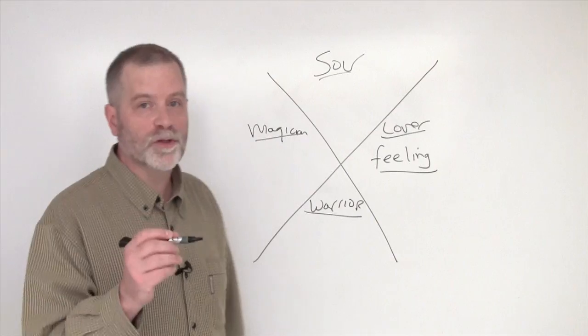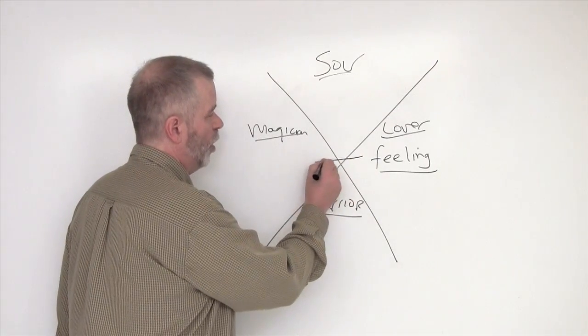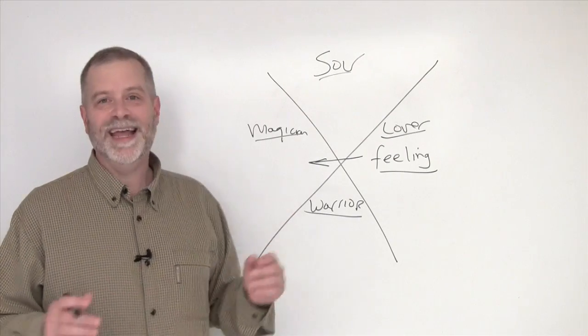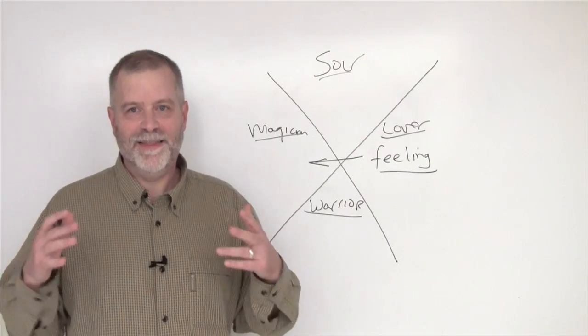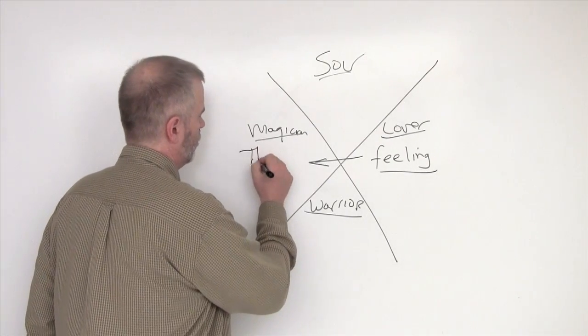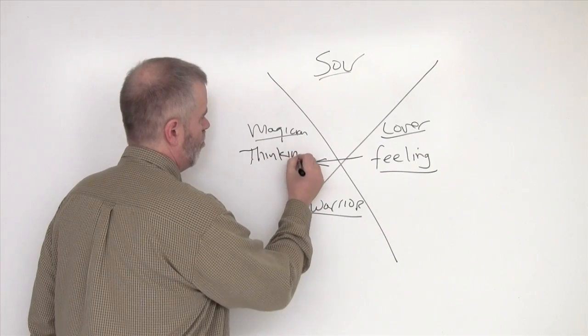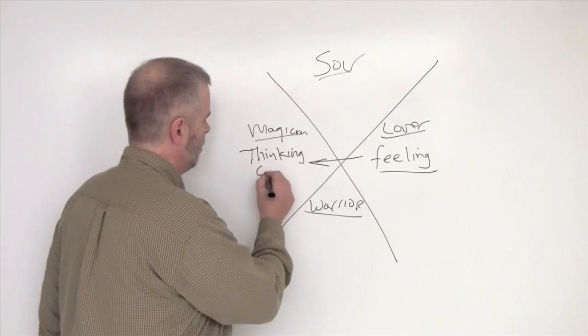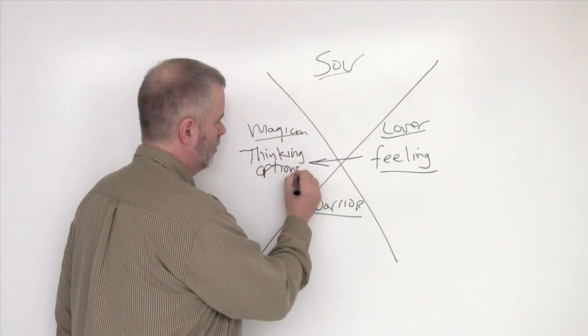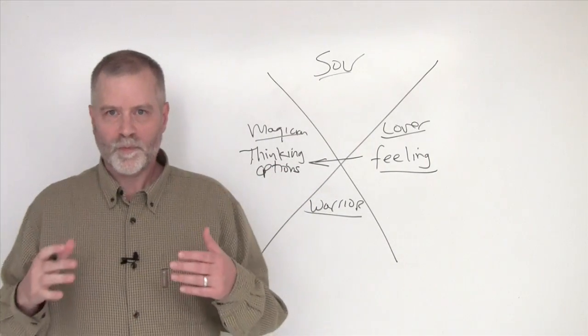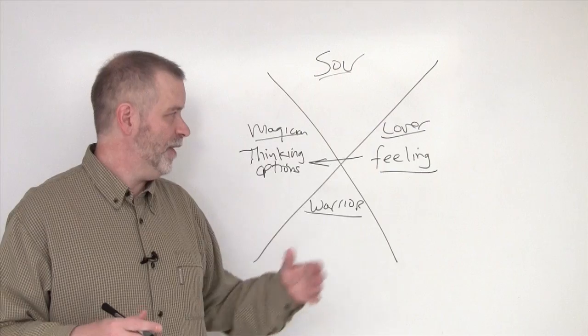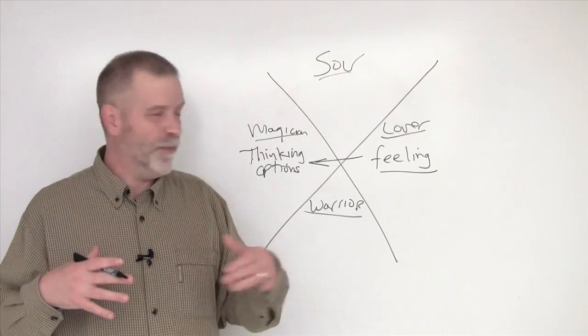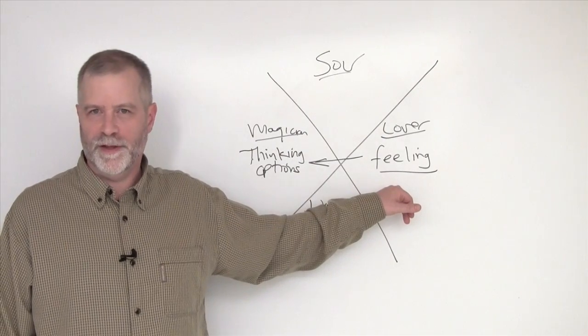The magician stage is about thinking in this context—about making options, thinking up options. What will start to happen is you'll feel along with them less. You'll still feel along with them, but you won't be overwhelmed by the flood of their feelings so much.